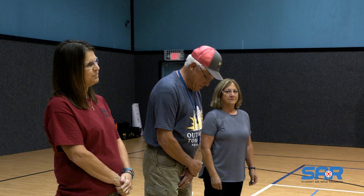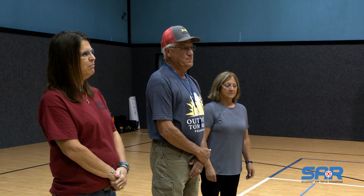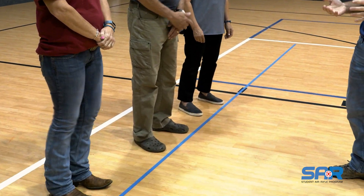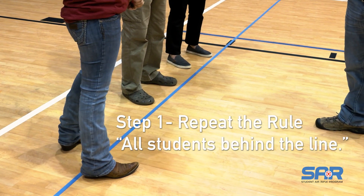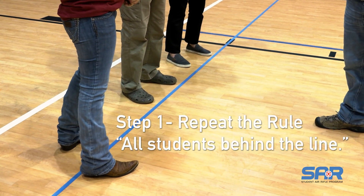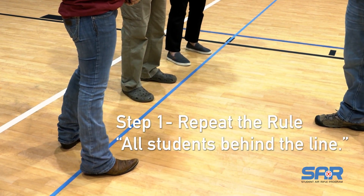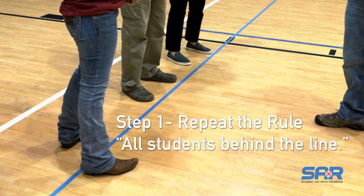The example we're going to use here is making sure all students are behind the line. Sometimes you may have a student that isn't behind the line. The first step is to repeat the rule: all students are behind the line.